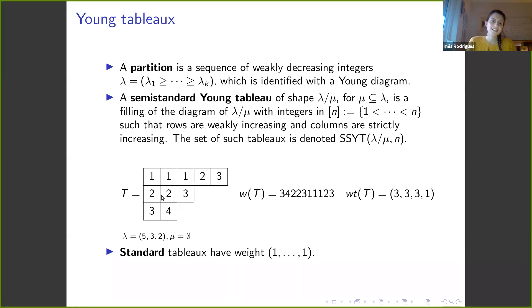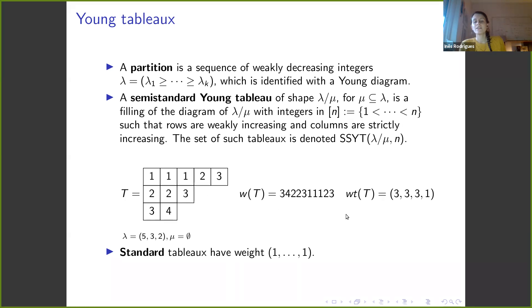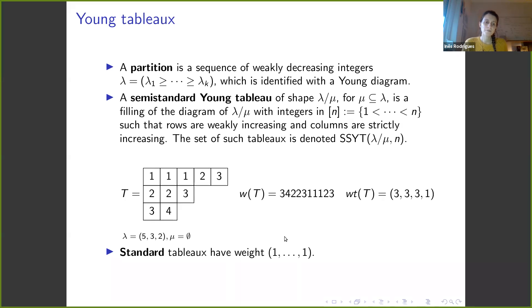Here we have an example. The word of the tableau is read row by row from bottom to top and then left to right: 3, 4, 2, 2, 3, etc. The weight is simply a vector where the first entry is the number of ones, the second the number of twos, etc. Standard tableaux are those with weight equal to the vector of all ones, so each entry appears exactly once from one to the number of boxes.